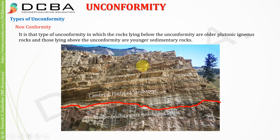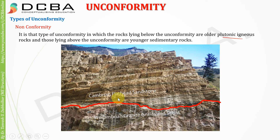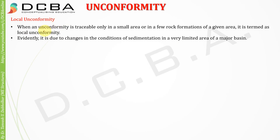Non-conformity is that type of unconformity in which the rocks below the unconformity are older plutonic igneous rocks and those above are younger sedimentary rocks. In the example shown, below the unconformity is Precambrian granite and gneiss and schist, and above is Cambrian Flathead sandstone — sandstone being sedimentary and granite being igneous.